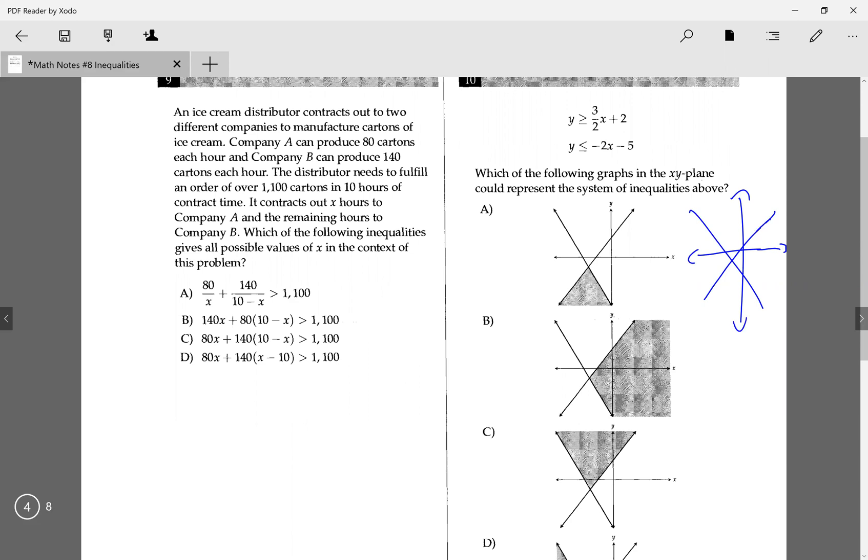Now that I have this, I'm going to test out these two lines with shading so I can get my shading region right. So 3 over 2x plus 2, I'm going to plug in 0 comma 0. 0 plus 2, that's 2, is less than or equal to 0. That's not true. So I know that for this line, it's going to be this region.